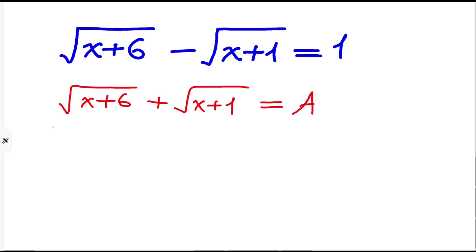Capital A, and multiply these two lines. Then we have, from the difference of squares, the square of square root of x plus six minus the square of square root of x plus one.